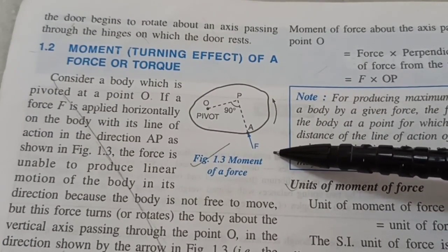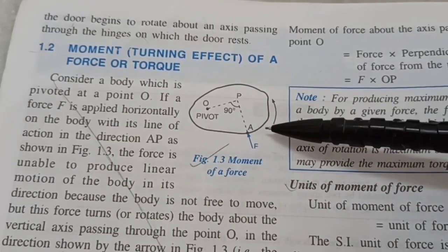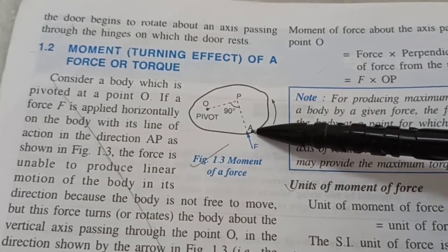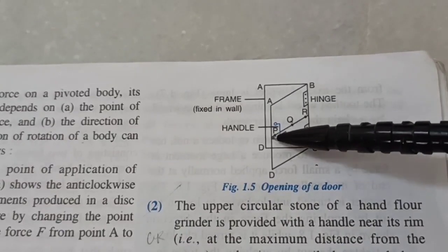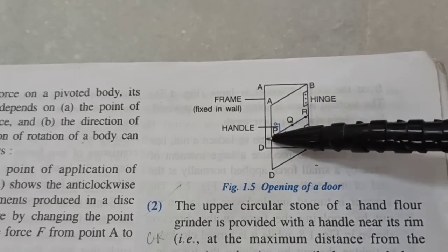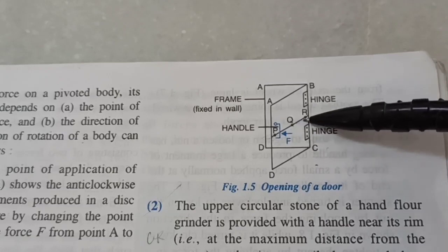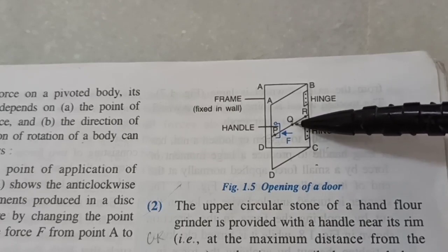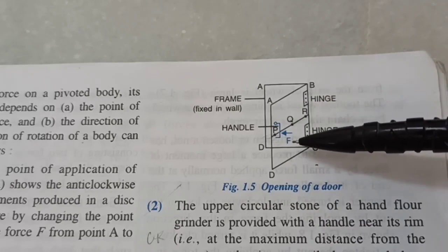The turning effect of force depends on two factors: how powerful the force is — more force means more turning effect — and how far it is applied from the axis of rotation. When you open a door, you apply a force far away from the hinges. The door handle is always at maximum distance from the axis of rotation, making it easy to rotate. A turning effect of force is nothing but the moment of force.